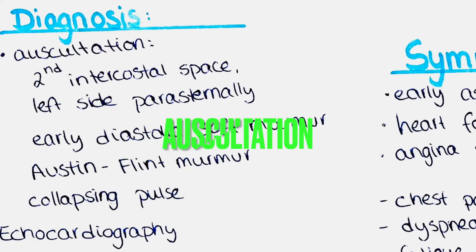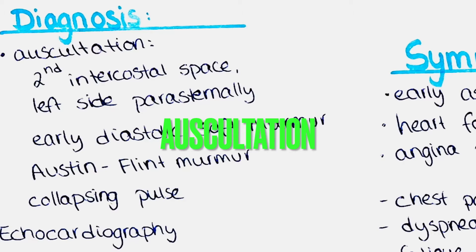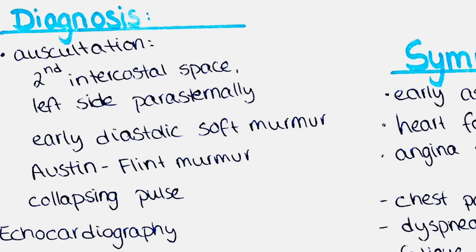How can we detect aortic regurgitation by auscultation? Aortic regurgitation is often characterized by an early diastolic soft murmur that we can hear during auscultating the patient's chest. To listen to the aortic valve, we place our stethoscope on the second intercostal space on the left side of the patient's chest, just next to the sternum.